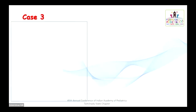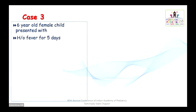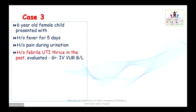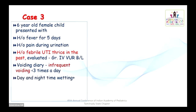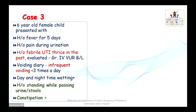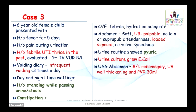Coming to the third scenario: This is a 6-year-old girl child who presented with fever for 5 days and pain during urination. There was a history of febrile urinary tract infection thrice in the past. She was evaluated and found to have grade 4 vesico-ureteric reflux bilaterally. On probing, she also had a history of infrequent voiding less than 3 times a day, day and night time wetting, standing while passing urine and stools, and chronic constipation.